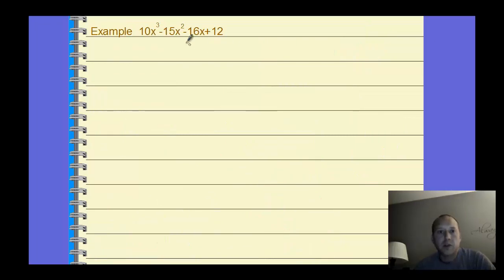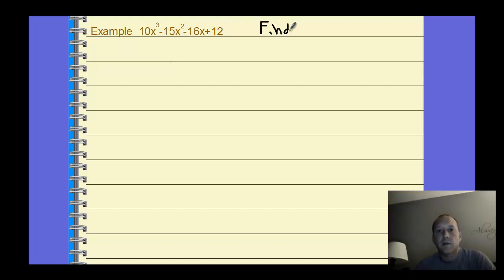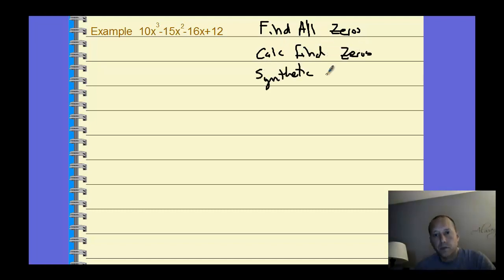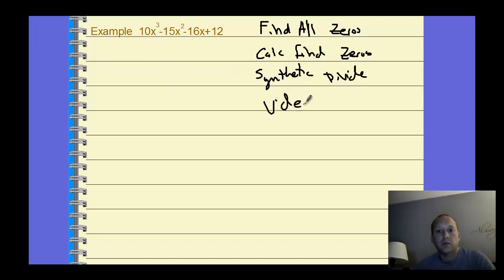For your homework problem, here's a hint: you could divide by a value to make the number smaller, which makes synthetic division easier. Plug the polynomial into a calculator to find the zeros, then synthetic divide to confirm them and find all zeros. Take this as your video problem, do the best you can, and we'll talk about it tomorrow. Have a good night.